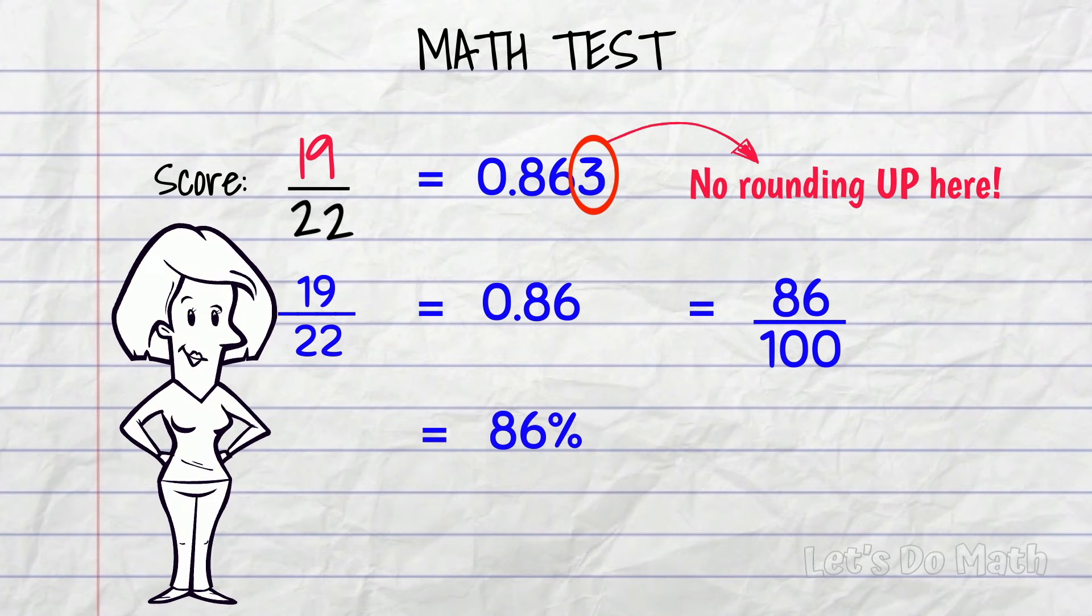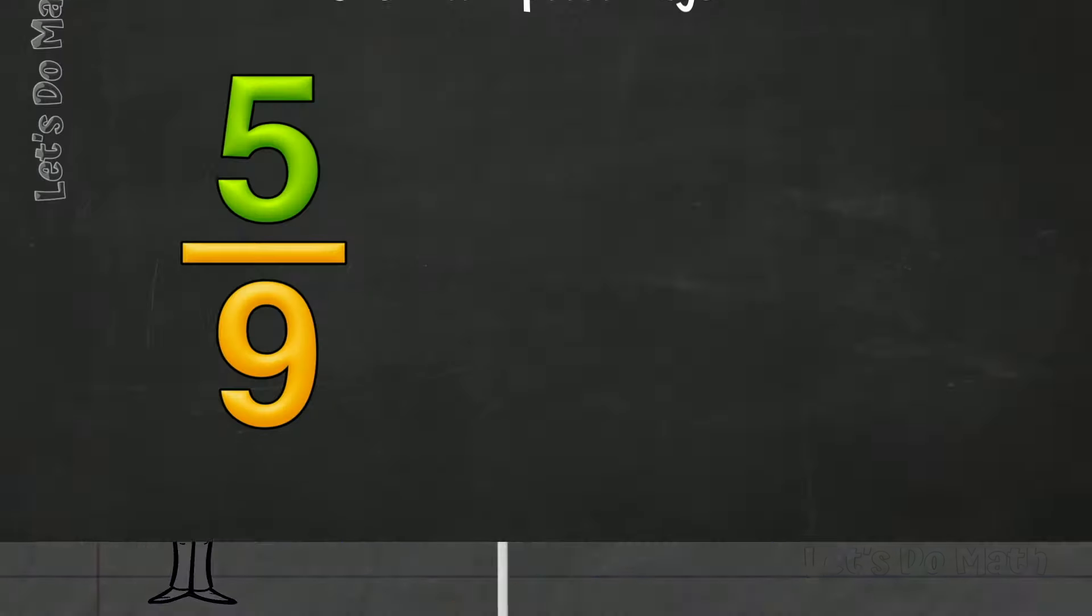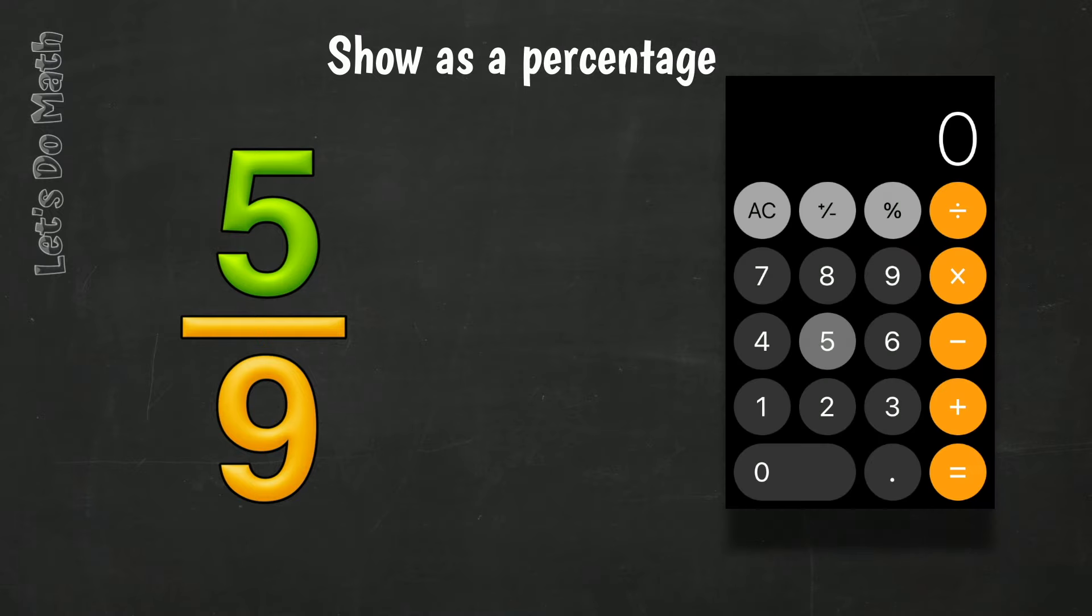Let's do a few more now with a calculator, so you'll get into the swing of it! 5 over 9. 5 divided by 9.